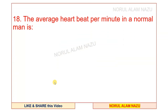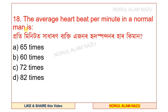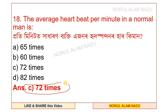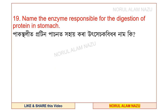The average heartbeat per minute in a normal man is — this is an important question. Question number 19: name the enzyme responsible for digestion of protein in the stomach.